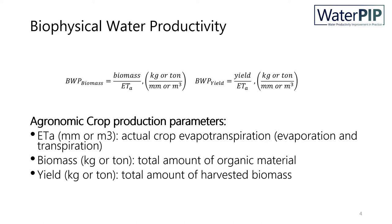Biomass is the total amount of organic material that includes the roots, branches, leaves, and the harvestable yield of the plant. Yield is the amount of biomass that is harvested; yield cannot exceed biomass, as yield is a proportion of biomass production. This proportion is the harvest index — the ratio of harvestable matter over total biomass.